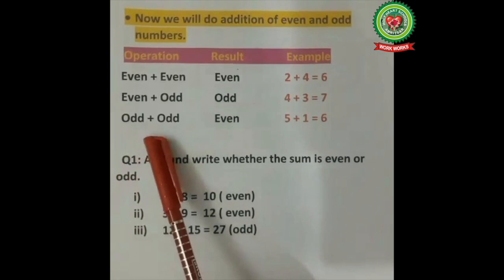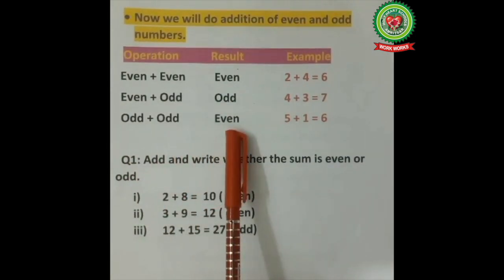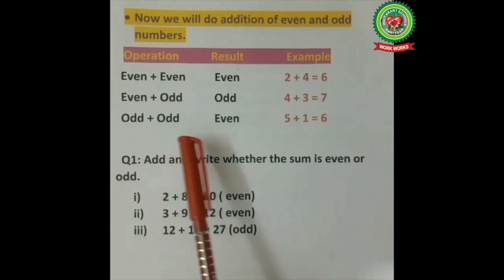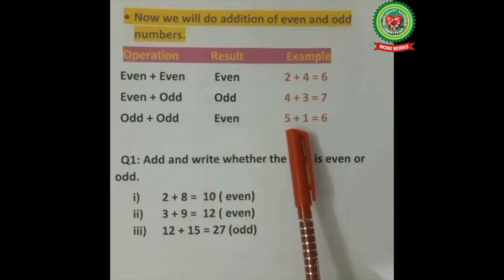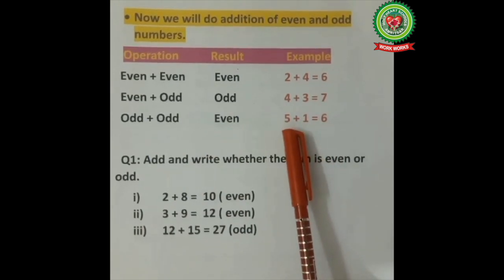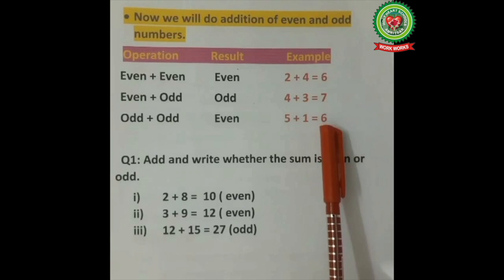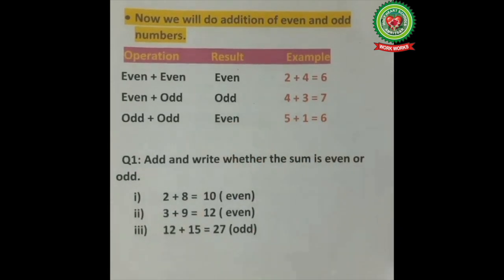Third: odd plus odd equals even — when we add two odd numbers, the answer is always an even number. For example, 5 plus 1: 5 is an odd number and 1 is an odd number, but we get the answer as 6, which is an even number.